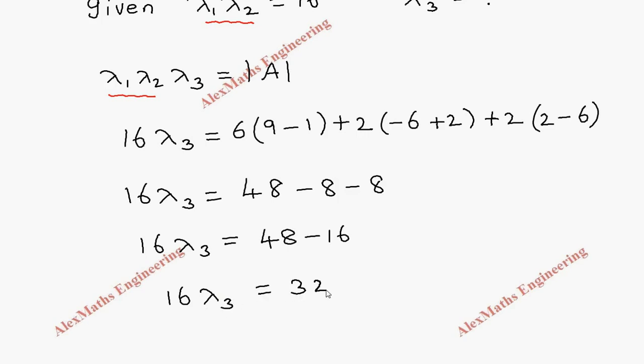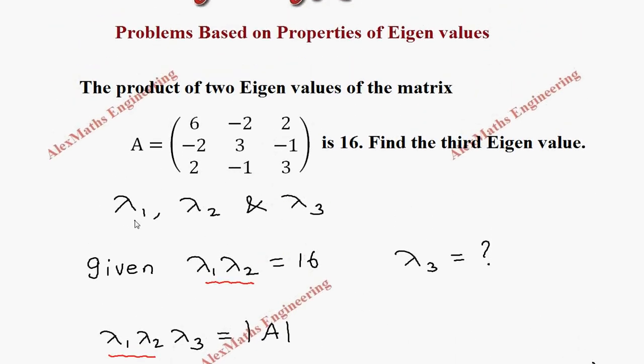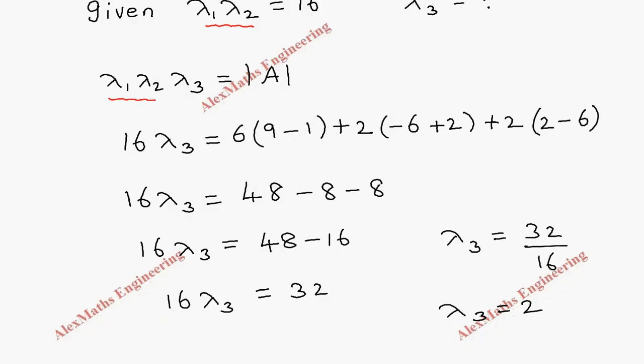From this, lambda 3 is 32 by 16. Therefore the third eigenvalue is 32 by 16 which is 2. So here we don't know what each eigenvalue lambda 1, lambda 2, lambda 3 is individually, but using the properties and the given condition, we found the third eigenvalue, that is 2.